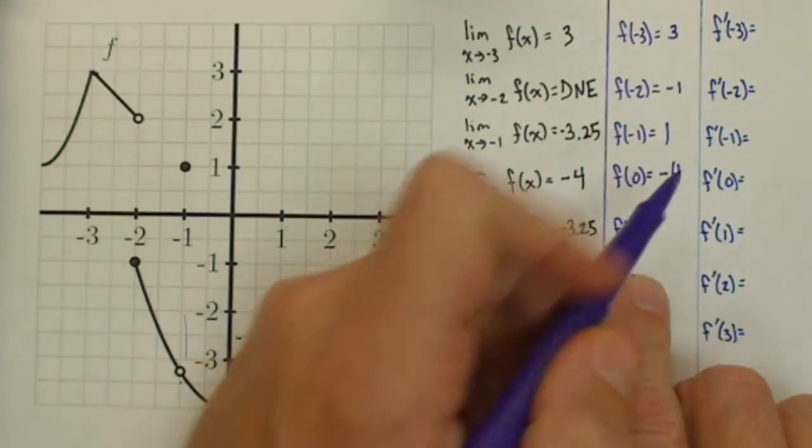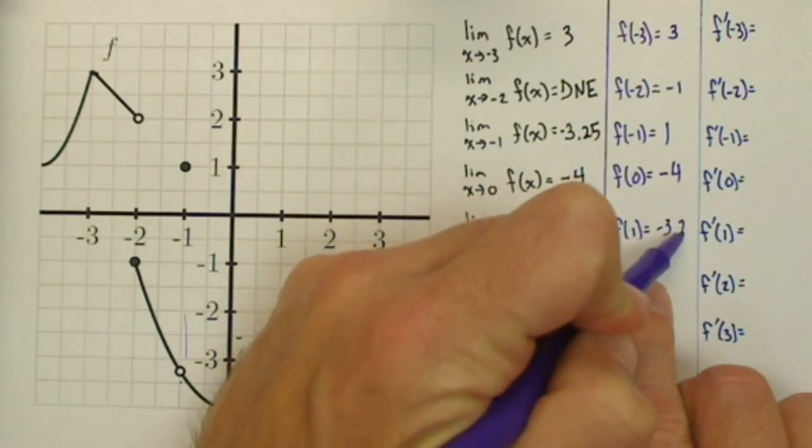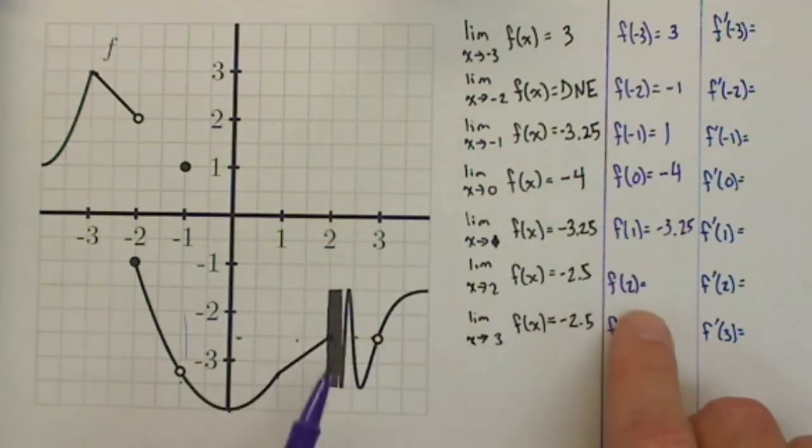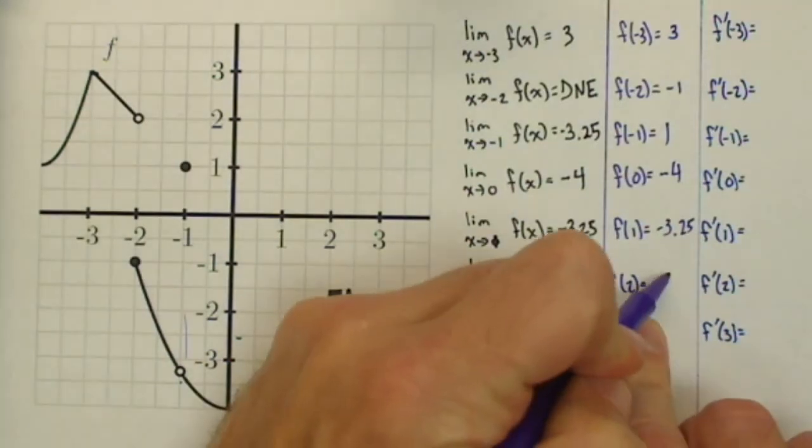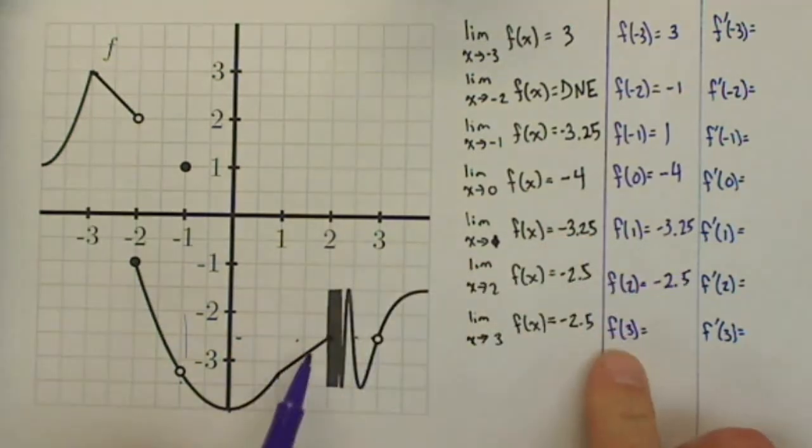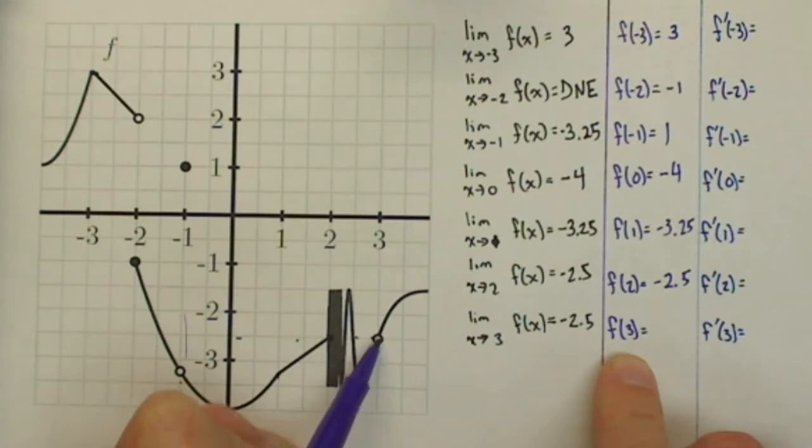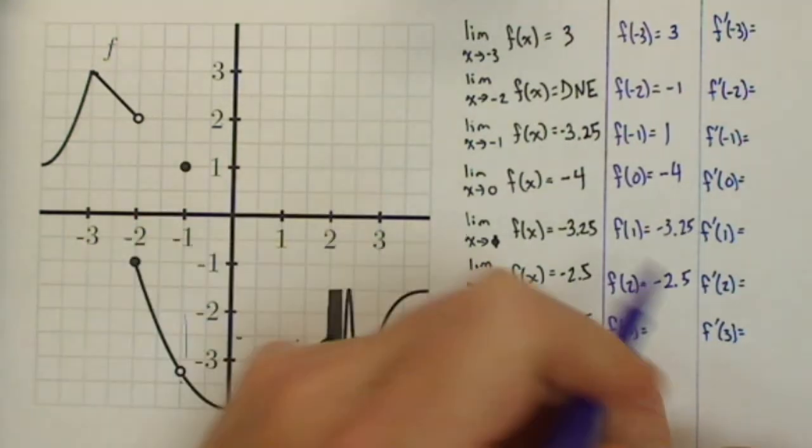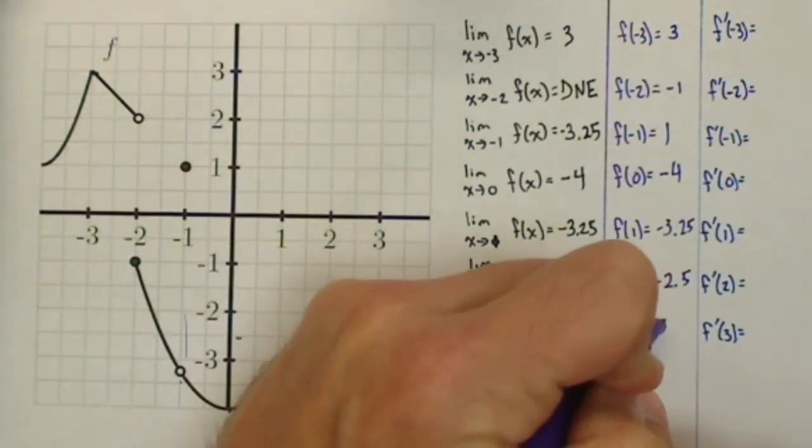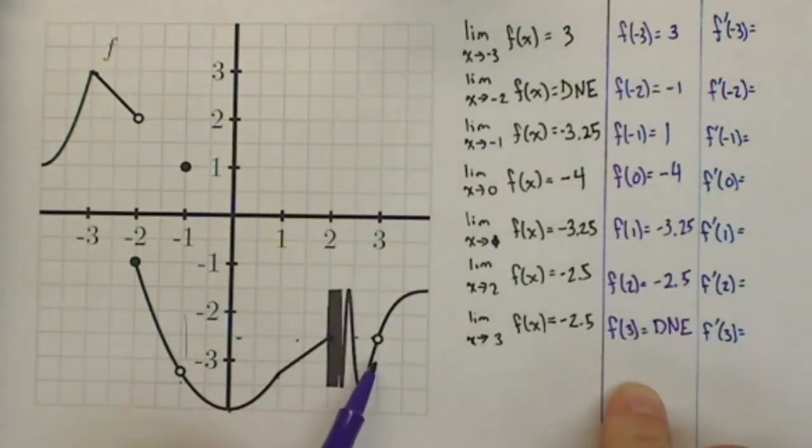f of 1, similar, is negative 3.25, and it's actually equal to that limit. f of 2, assuming again, I think it's going to be continuous in those oscillations, and I think it also is going to be the negative 2.5. And then finally, f of 3, notice there's a hole at 3, and there's no other point at 3, so this would be a case where it does not exist. The function is not defined for that input.